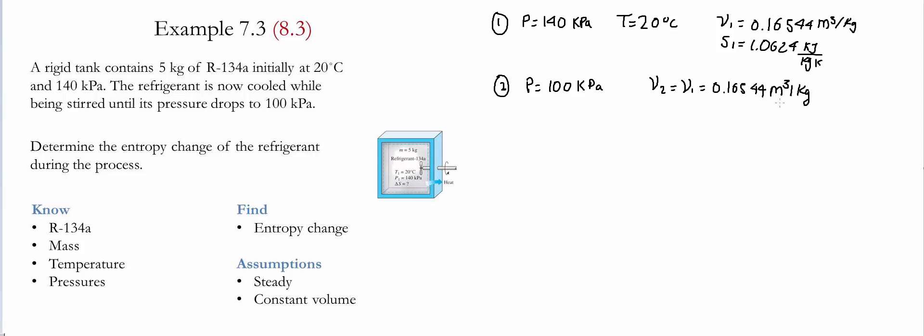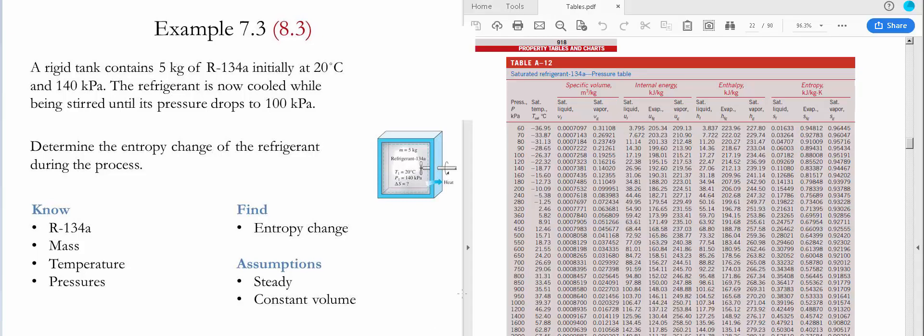Now we're going to determine what phase we have in this state. We go to the table and for 100 kilopascals we see that the value we have for the specific volume is between the saturated liquid and saturated vapor, therefore this is a saturated mixture.